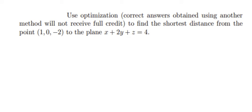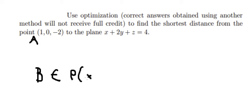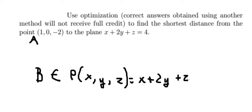I will now set up the problem. Let me label point A as our given point, and point B as a point that belongs to the plane. The equation of the plane is x + 2y + z = 4.